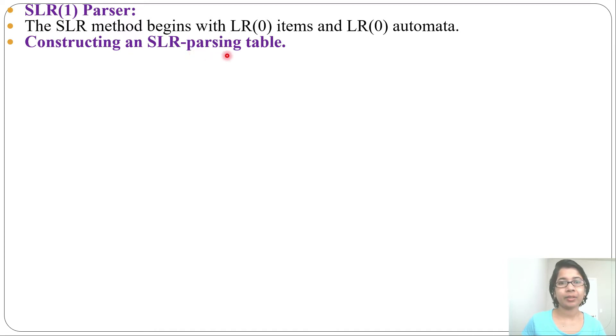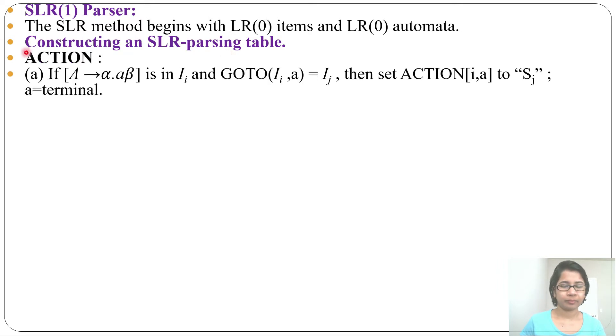So let's see how we can construct an SLR parsing table. What are the rules for constructing SLR parsing table? There will be two parts: one for ACTION and another will be for GOTO. In ACTION there will be all the terminals and dollar. In GOTO there will be non-terminals.